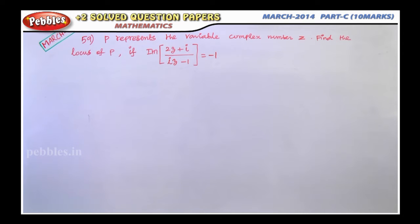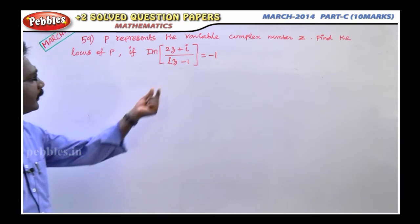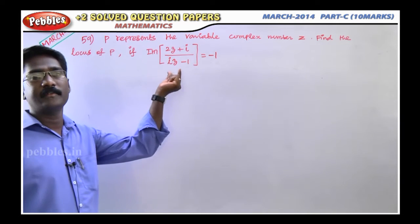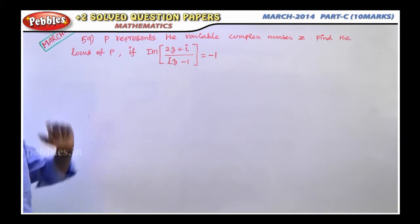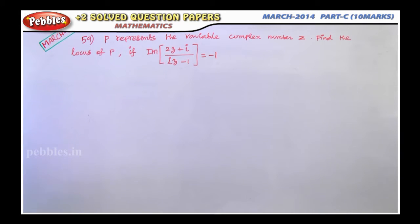P represents the variable complex number Z. Find the locus of P, given that the imaginary part of (2Z + i) divided by (iZ - 1) equals minus 1. This is a very important problem involving locus conditions for complex numbers.